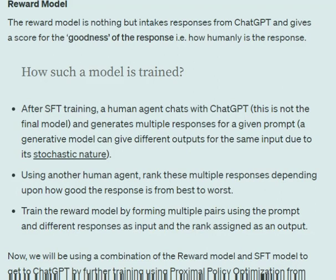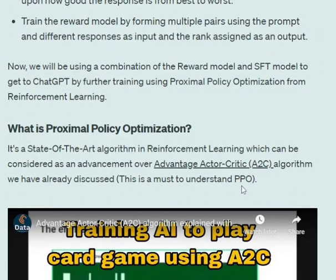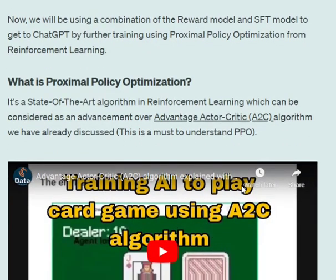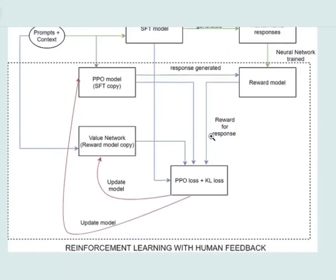We've already talked about the reward model. Using that reward model along with a reinforcement learning algorithm — which in ChatGPT's case is Proximal Policy Optimization (PPO) — the model is further trained. Looking at the architecture, the reward model is generated with human feedback, where a human labels all the responses generated by the LLM based on their quality. The model is then trained on that.